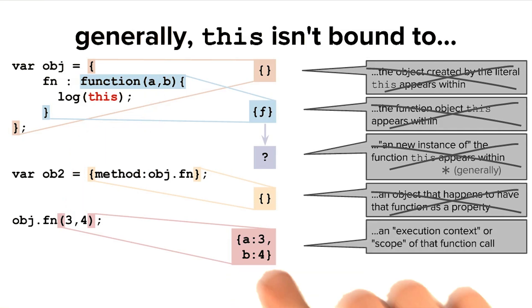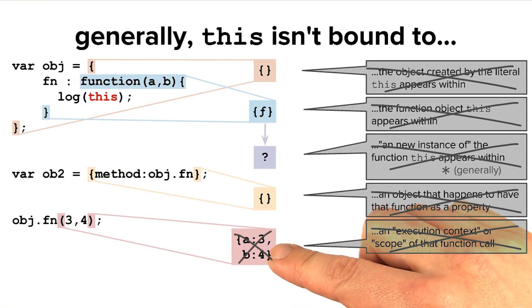We would either call this an execution context, or a scope. But this is also not what the keyword this refers to. As we recall from our earlier conversation about scopes, it's not the case that JavaScript gives you any memory reference access to these constructs.